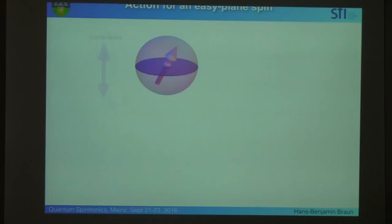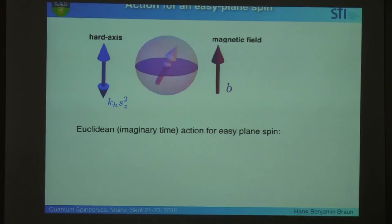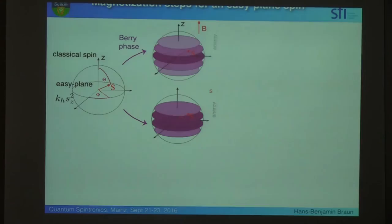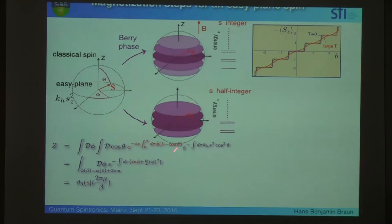Eventually, what we can do is we can write down an action for an easy plane spin in an external field, which is the object which was discussed extensively on Monday. So, this is the action. And now, we put the action here, we can actually put the action into action, and integrate out the out-of-easy-plane degrees of freedom.